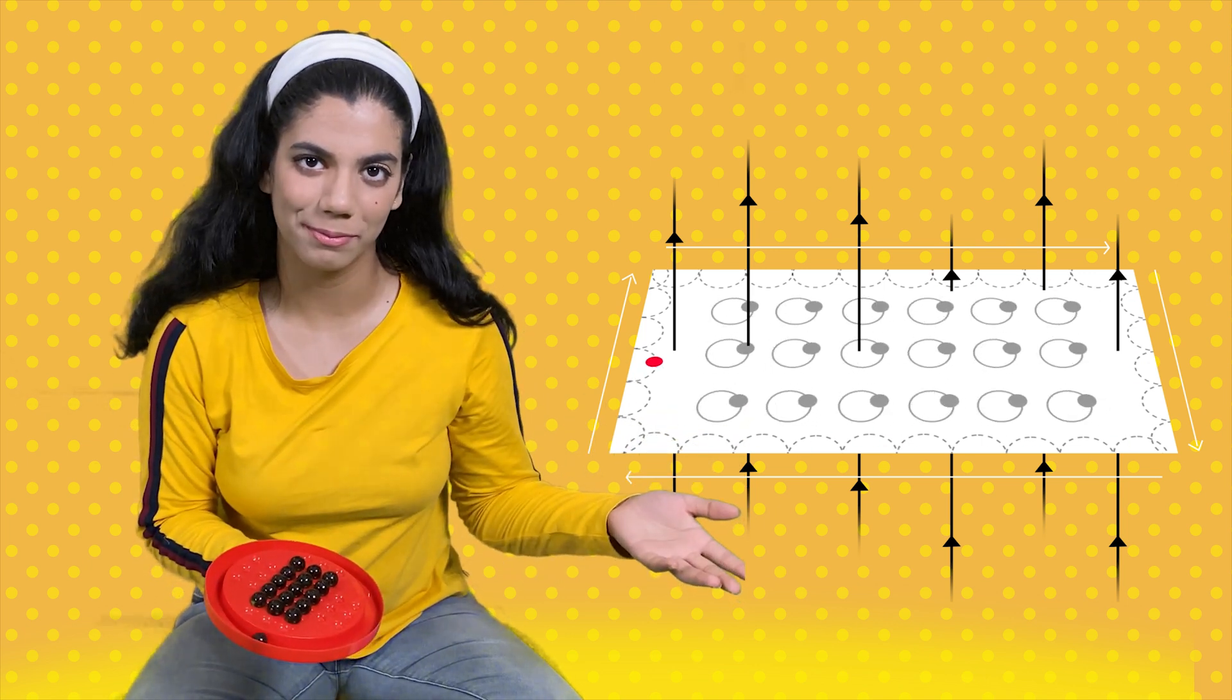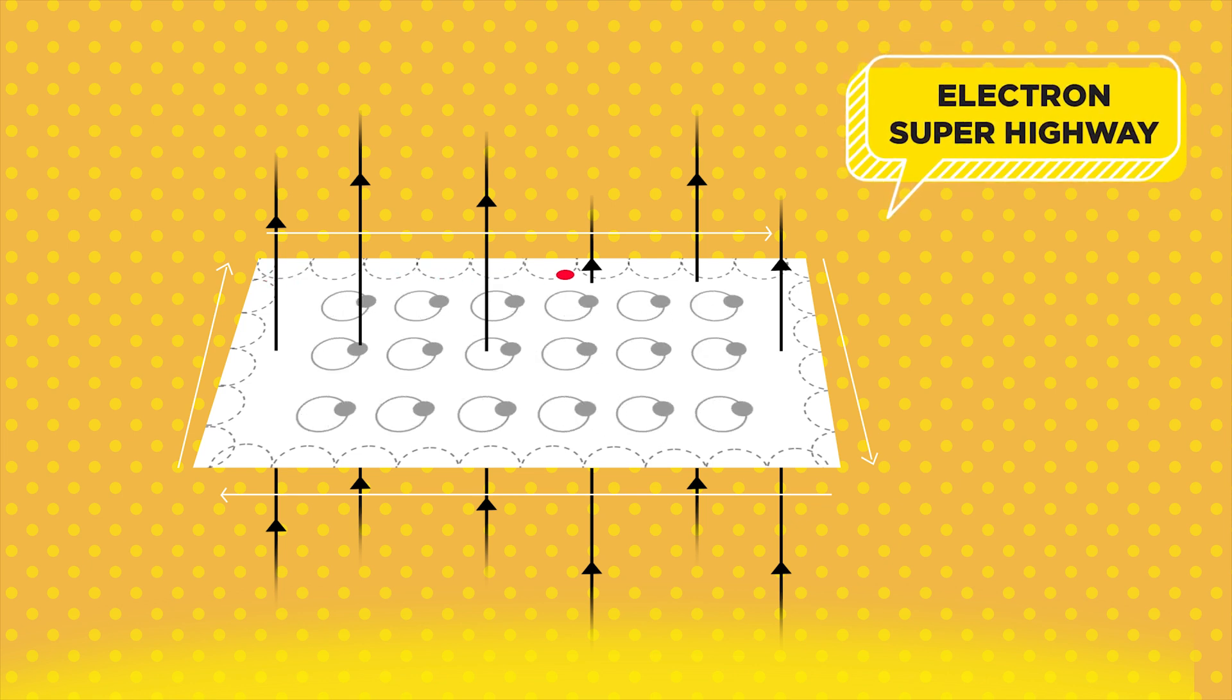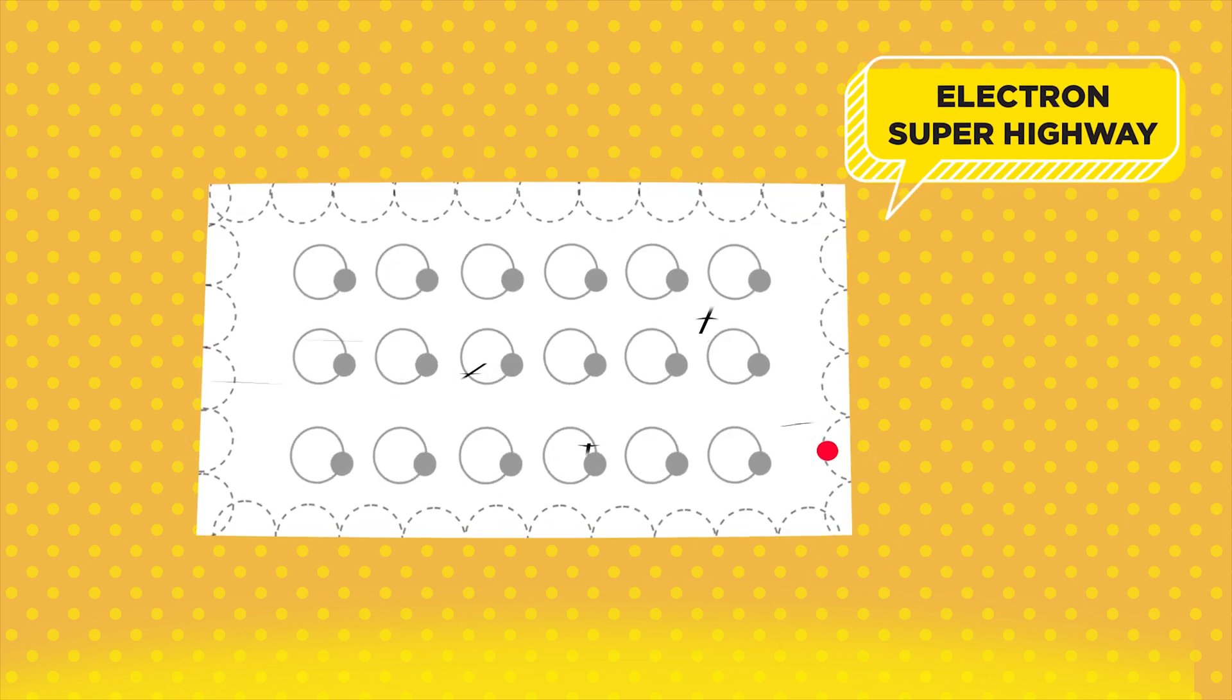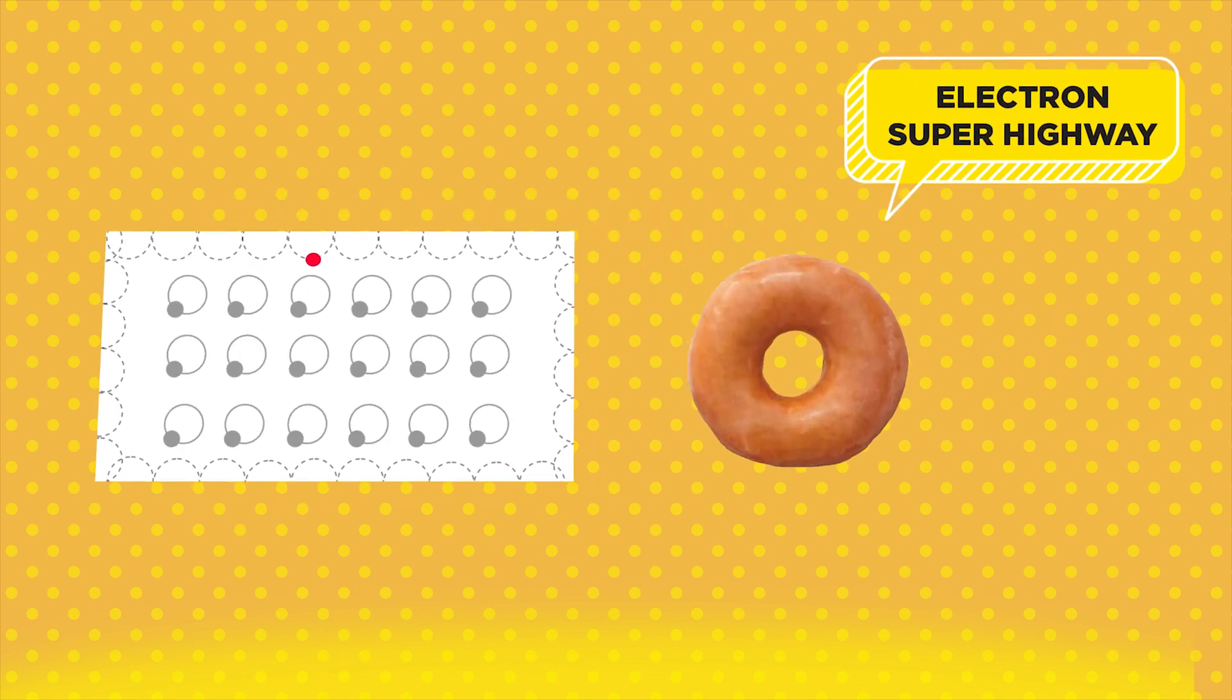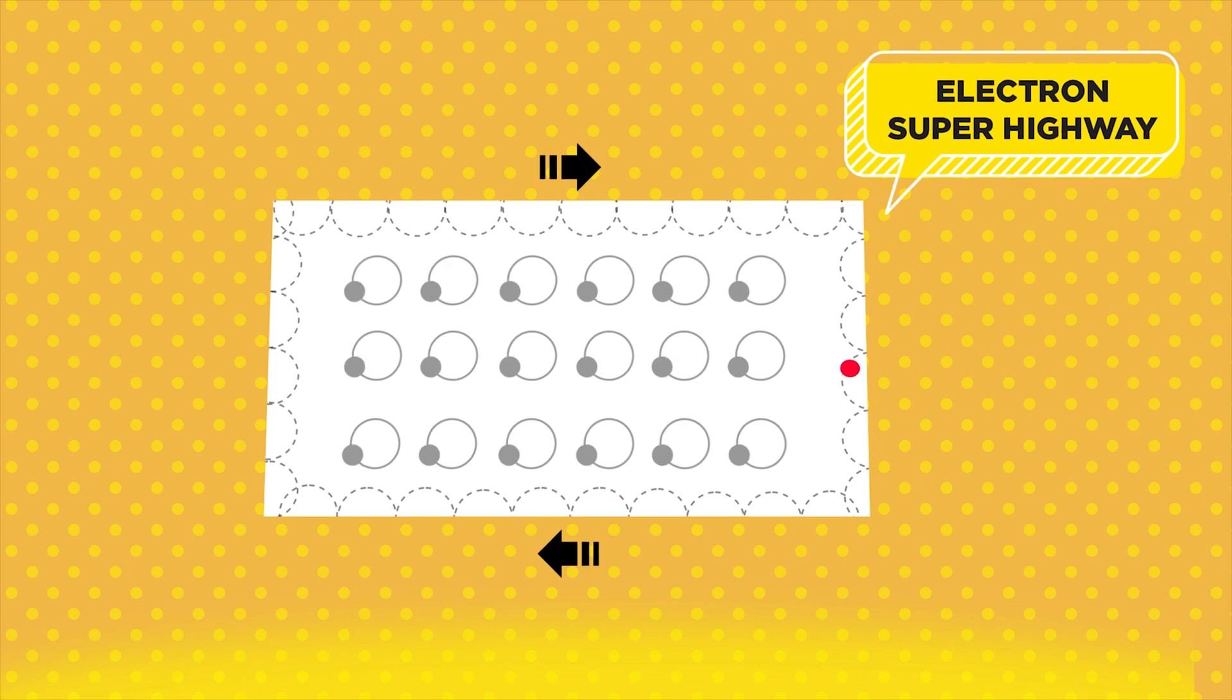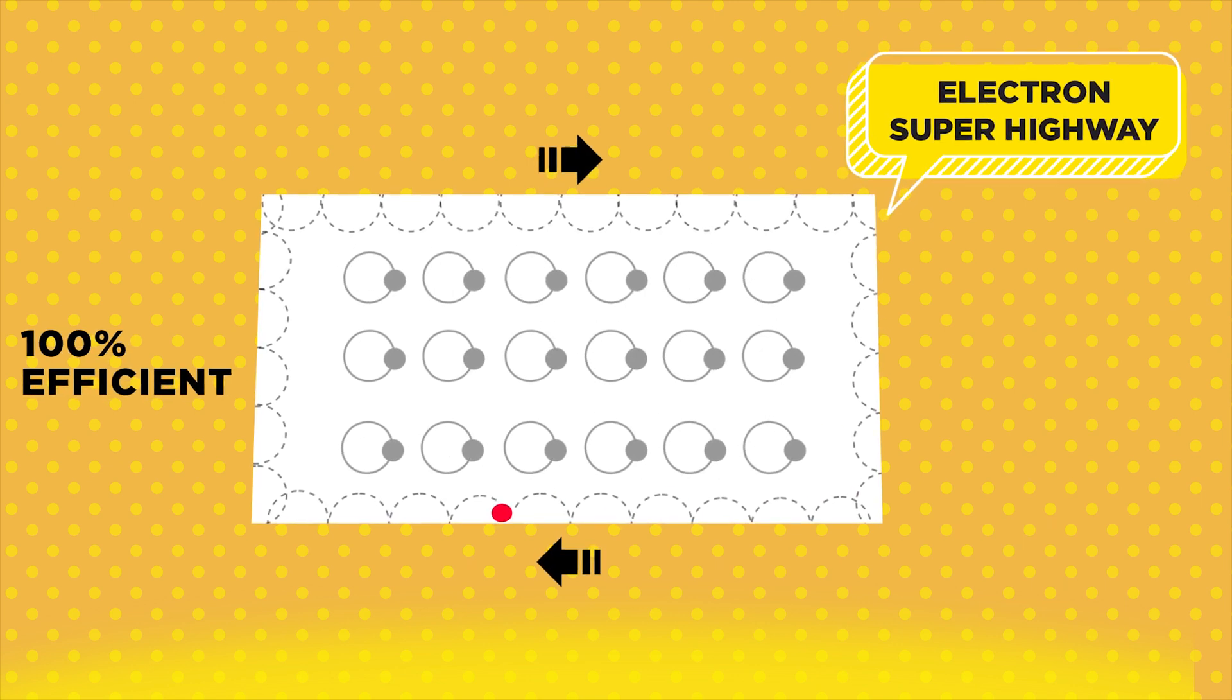The bulk is an insulator, and the edge is a conductor, unaffected by small imperfections or impurities in the material. This edge state is topological—no energy losses to heat, making it a super-efficient electron highway.